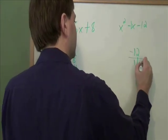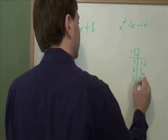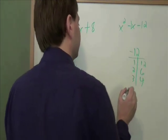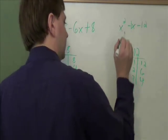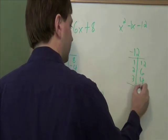So 12 could be 1 times 12. It could be 2 times 6. It could be 3 times 4. And that's all the possibilities. So which of these could give us a negative 1? That would be 3 and 4.